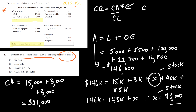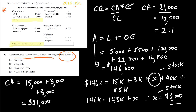So the current ratio equals 21,000 over current liabilities of 10,500, which equals 2 to 1. The business has twice as many assets compared to liabilities. Since the industry standard is 1.9 to 1 and we are at 2, we're doing pretty well — it's not too high because it's very close, and it's not low. It's acceptable.